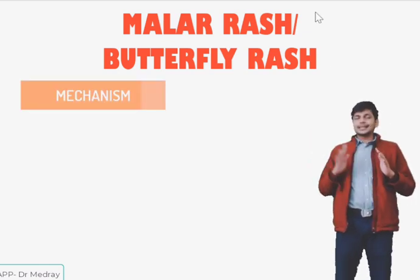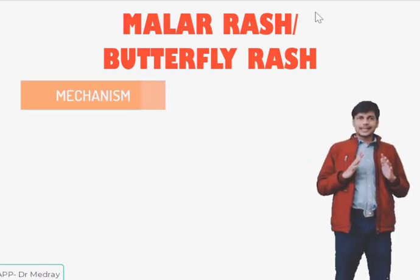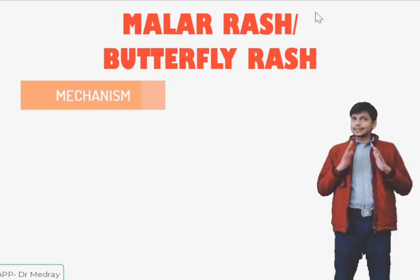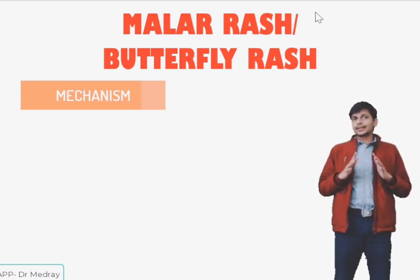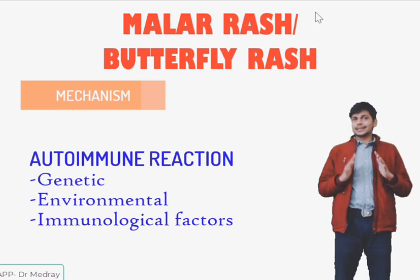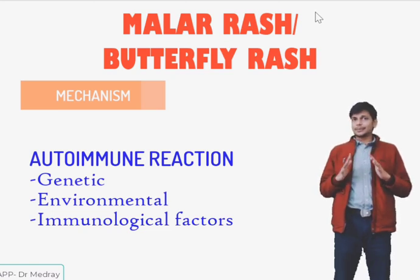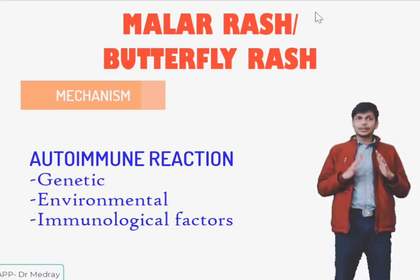What is the mechanism behind malar rash? The exact cause of malar rash is not known, but it is thought to occur because of an autoimmune reaction caused by genetic, environmental, and autoimmune factors.